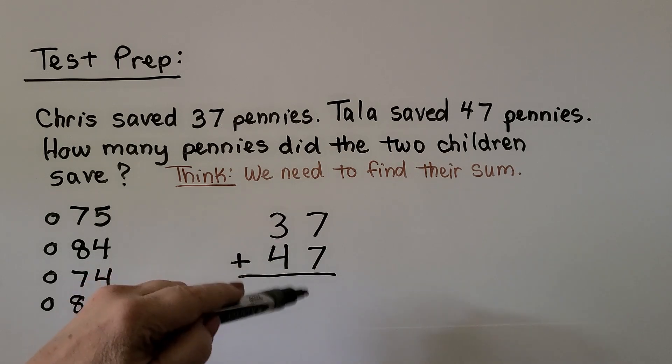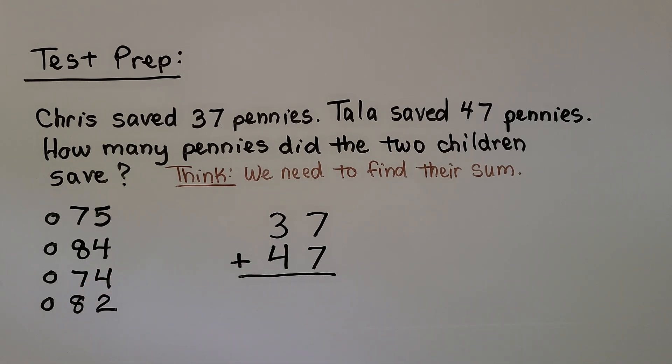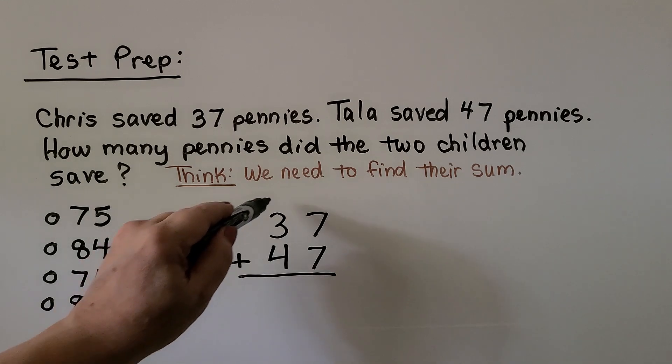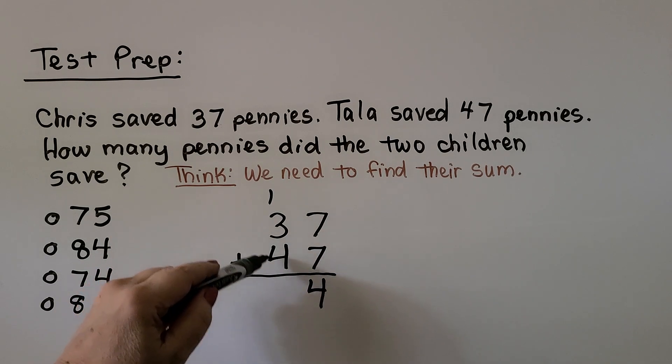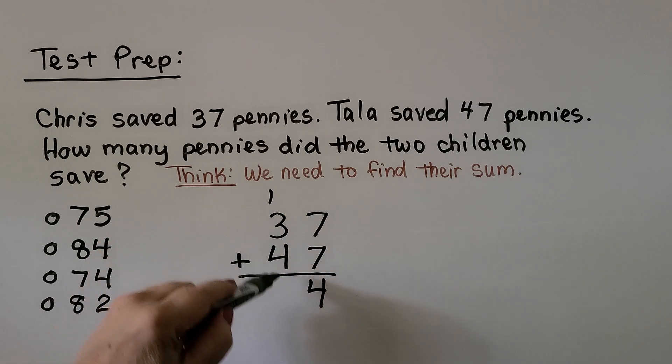We can add the ones place. Seven plus seven is the doubles. Seven plus seven is 14, which is one 10 and four ones. We have three plus four is seven, plus one more is eight.